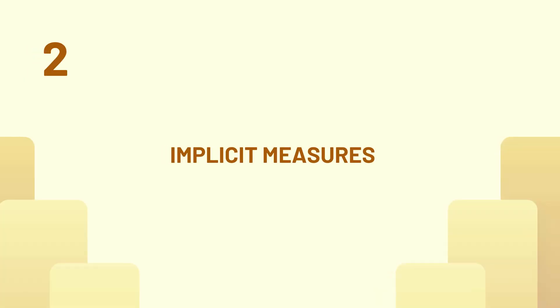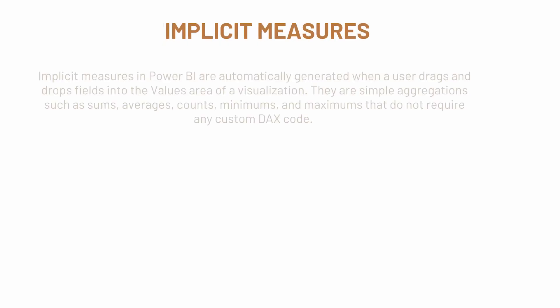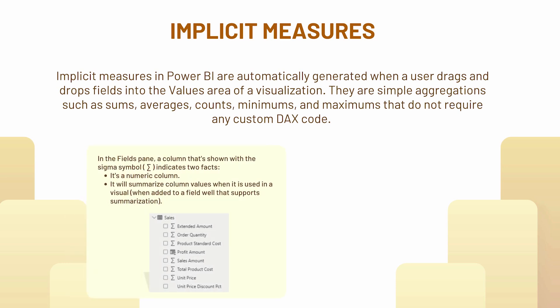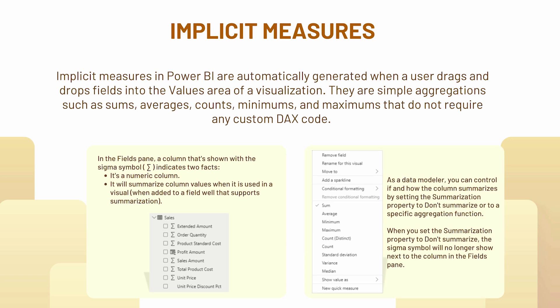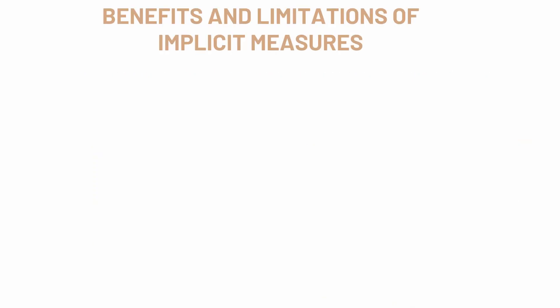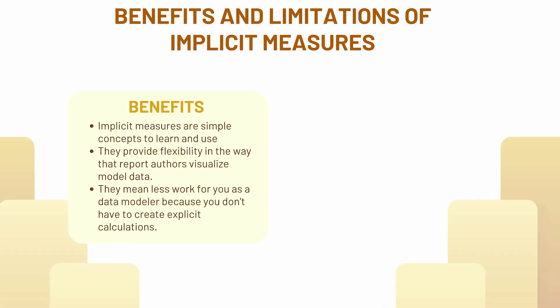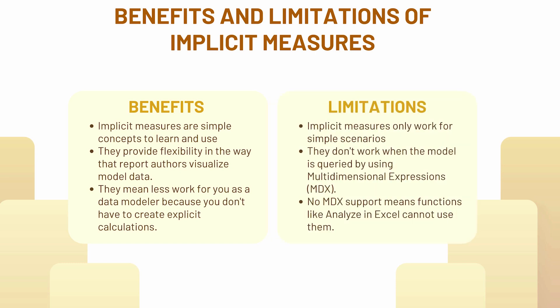Coming to implicit measures: whenever you see a sigma sign in front of any field inside your tables or data fields, that means you can apply different measures there. The benefits of implicit measures are that they are easy — you don't need to do much and can simply change them. However, it is not possible to define custom logic with them, and that is their limitation.